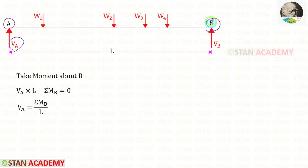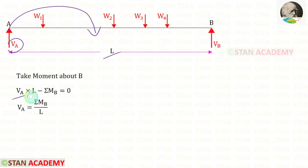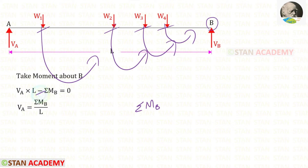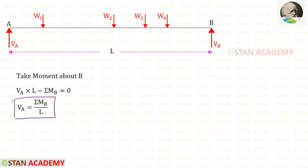To find the vertical reaction at point A, that is Va, let us take a moment about B. Va is acting in the clockwise direction so that it will be positive and the distance is L. All of these 4 loads are acting in the clockwise direction. We know that we have to multiply these loads with the distance up to point B. Let us keep the sum of the moments due to these loads as sigma Mb. Since all of these loads are acting in the anticlockwise direction, sigma Mb will be negative. Finally, for Va, we will get this expression.